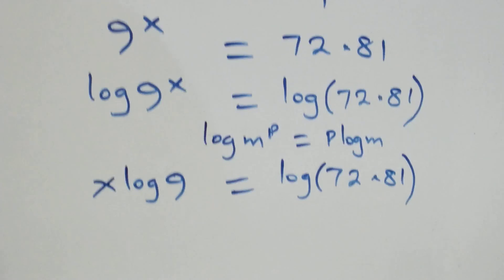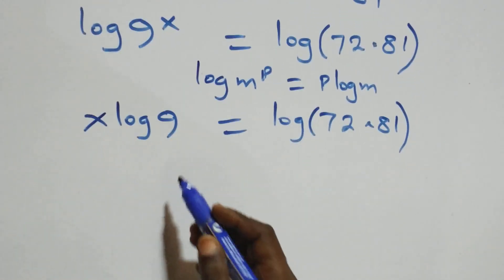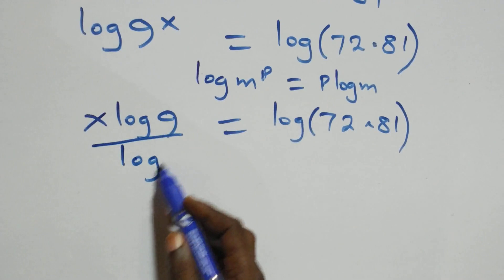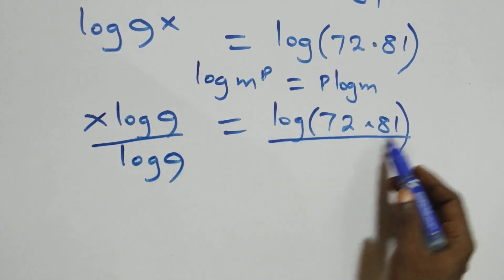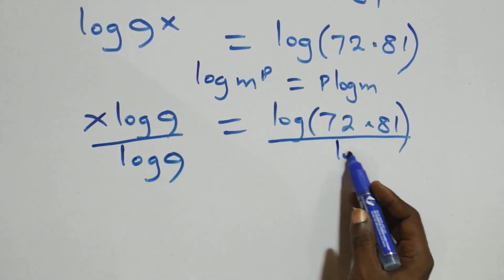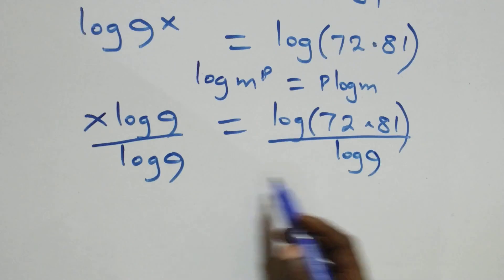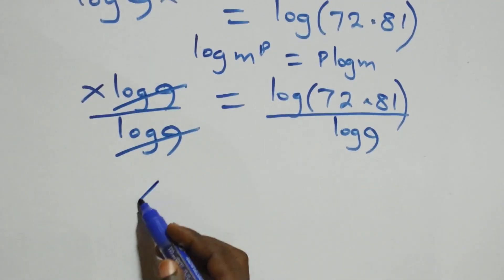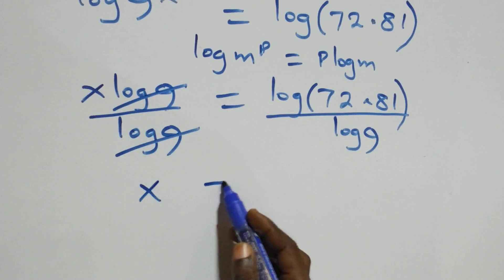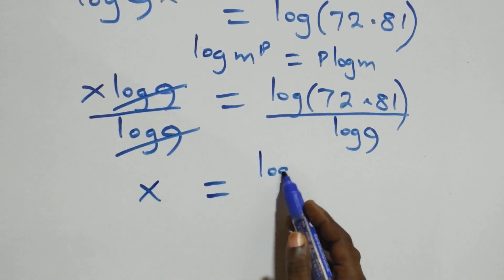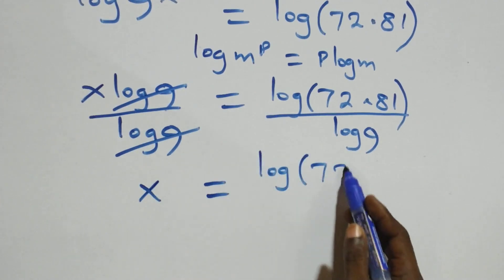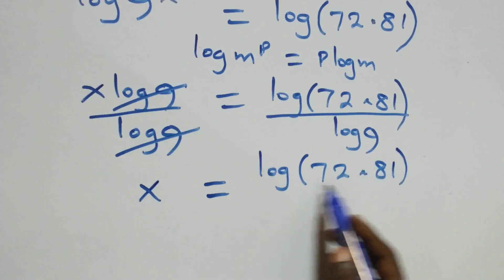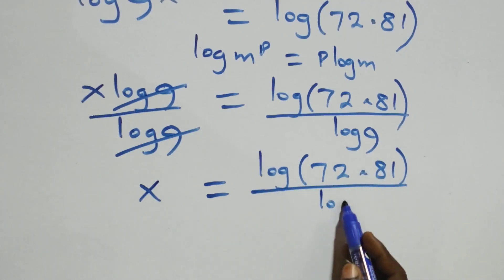Then we divide both sides by log 9. The log 9 terms cancel each other, and we have x left, which is equal to log(72 × 81) over log 9.